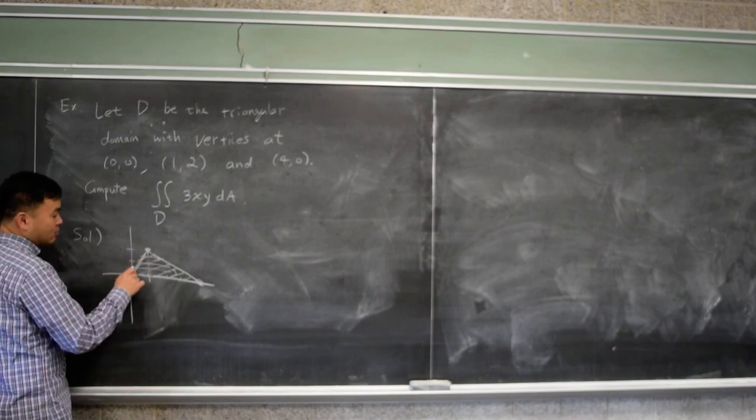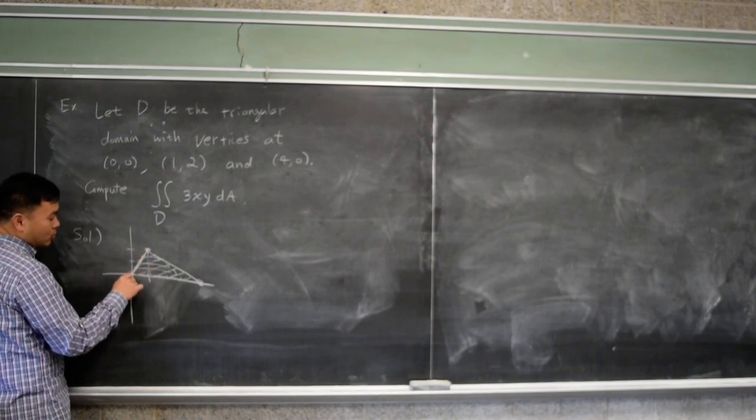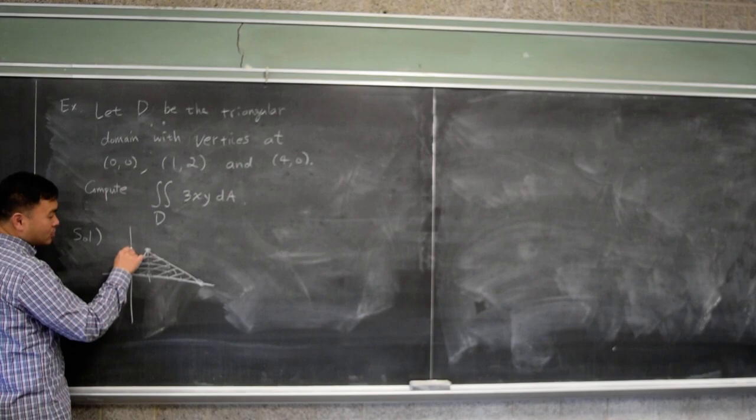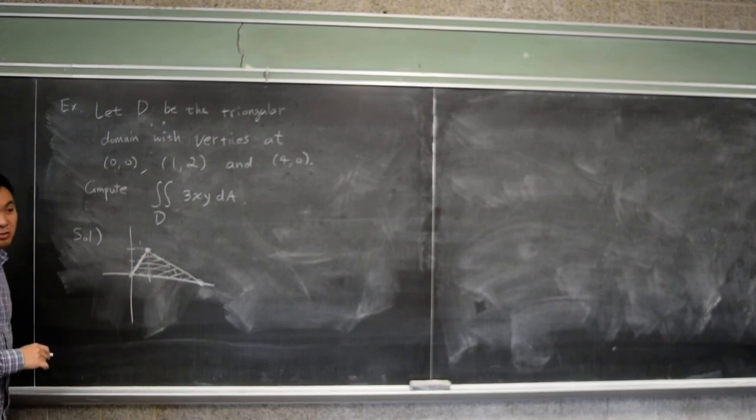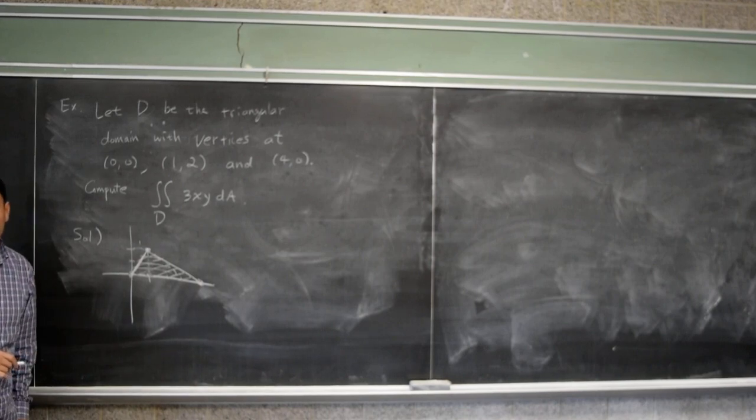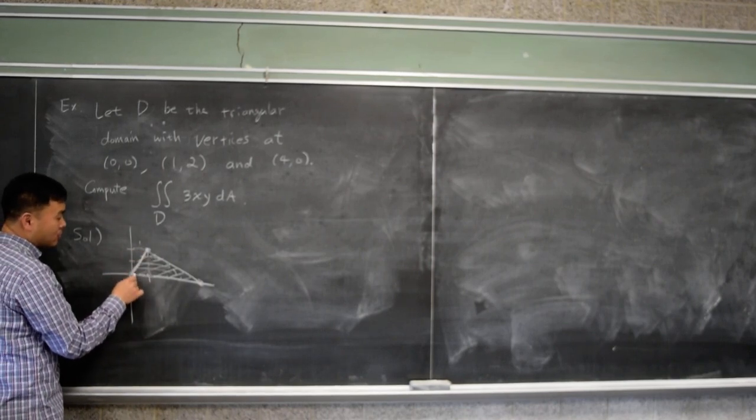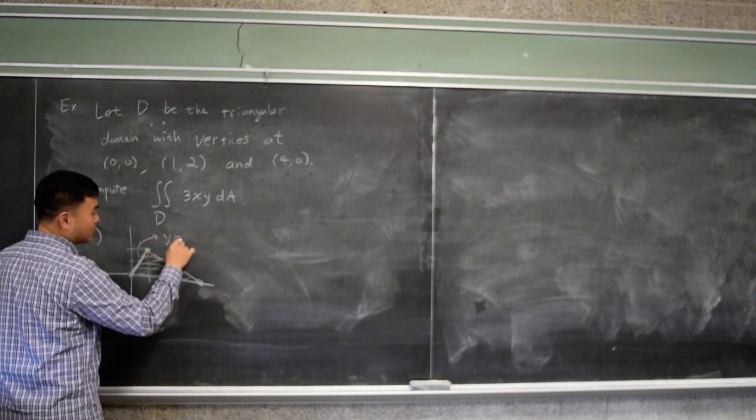First of all, what's the equation of this line? Well, this is going up by two and going right by one. Using rise over run, what's the slope of this line? Two. Yeah, the slope is two. Therefore, the equation of this is y equals 2x.